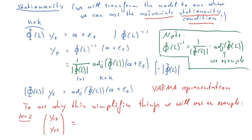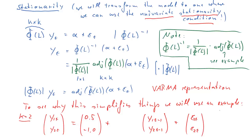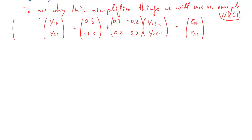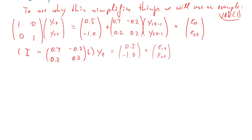To see why this simplifies things, we use an example of dimension 2 — two elements in y: y1 and y2. On the right-hand side we have two constants, then lags: y1,t-1 and y2,t-1, and error terms epsilon1t and epsilon2t — that gives us a VAR(1). The coefficient matrix is 2-by-2 and we set values 0.7 and 0.2 on the diagonal and -0.2 and 0.2 off-diagonal. We can write an identity matrix in front without changing anything, then bring the right-hand side lags to the left, giving the coefficient matrix times L times yt, with the constant and error term on the right.